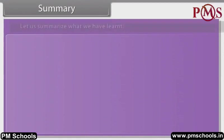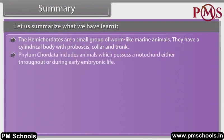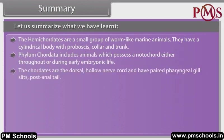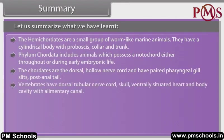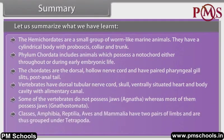Summary. The hemichordates are a small group of worm-like marine animals with cylindrical body composed of proboscis, collar and trunk. Phylum Chordata includes animals which possess a notochord either throughout or during early embryonic life. Chordates have a dorsal hollow nerve cord and paired pharyngeal gill slits and a post-anal tail. Vertebrates have a dorsal tubular nerve cord, skull, ventrally situated heart and body cavity with alimentary canal. Some vertebrates do not possess jaw (Agnatha), whereas most of them possess jaw (Gnathostomata).